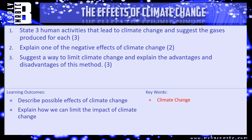That's everything you need to know for this video. I've got three questions for you. Number one: state three human activities that lead to climate change and suggest the gases produced for each — you need to state a human activity and then tell me the greenhouse gases it produces. Question two: explain one of the negative effects of climate change in some detail. Number three: suggest a way to limit climate change and give an advantage and a disadvantage of that method. Pause the video, have a go at the questions, and we'll see how you've done in a minute.